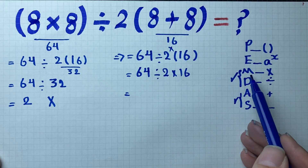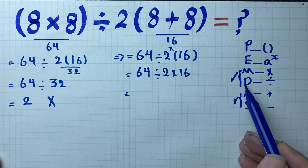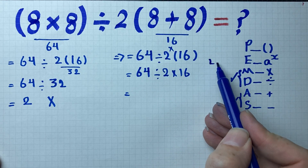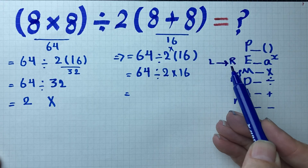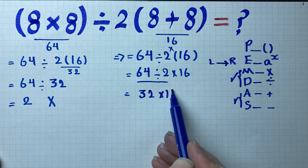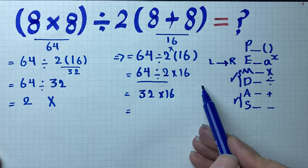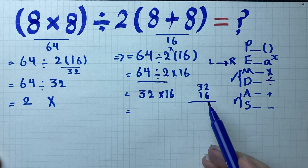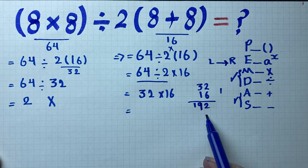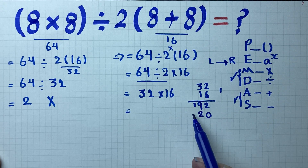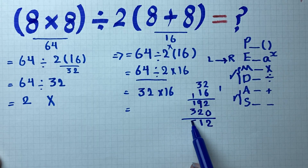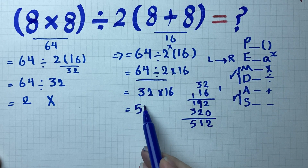Next we have division and multiplication. Since they share the same level, we start from the left and work to the right. First, division: 64 divided by 2 is 32, giving us 32 times 16. Now 32 times 16: 6 times 2 is 12, carry the 1; 6 times 3 is 18, plus 1 is 19; then 1 times 2 is 2, 1 times 3 is 3; adding gives 512. So your answer is 512.